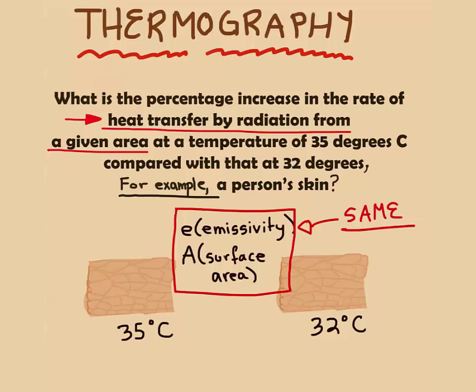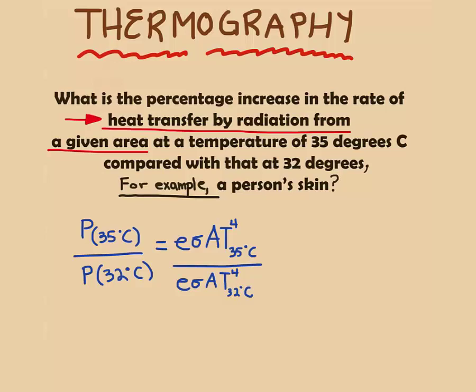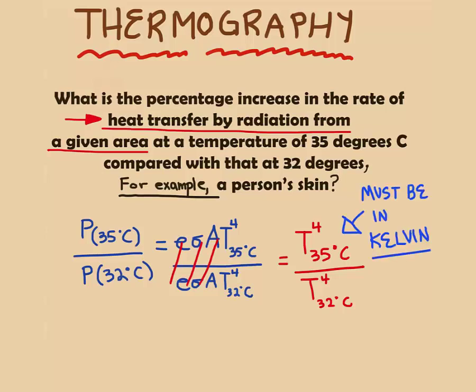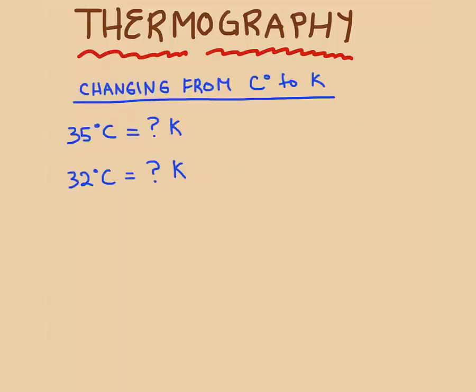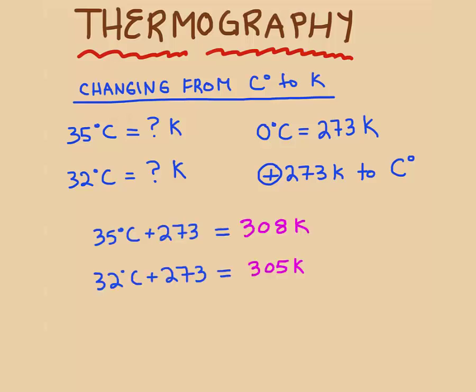When we make a ratio and compare the two temperatures, emissivity and area cancel out. So you can see that we're just left with temperatures. But it's in Celsius and we need to convert it to Kelvin. To convert to Kelvin from Celsius, you need to know that 0 Celsius equals 273 Kelvin. So to get Kelvin from Celsius, we add 273 Kelvin to our temperatures. This gives us 308 Kelvin and 305 Kelvin.